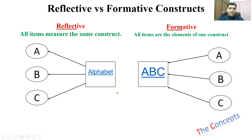Let's go to the root words. Reflective has the root word 'reflect,' which means this construct reflects all of its items. In other words, all items measure the same construct. For example, A is alphabet, B is alphabet, C is alphabet — so each of these items has the independent power to measure the construct.